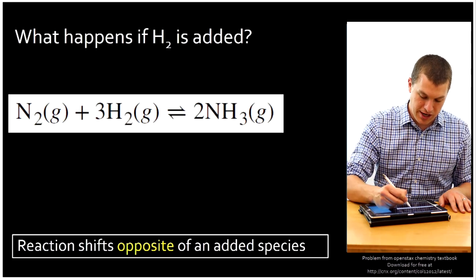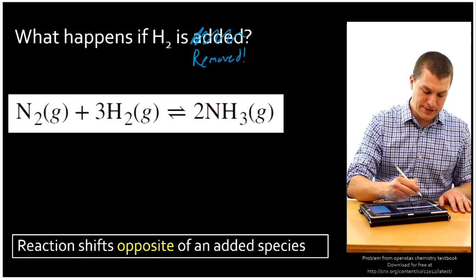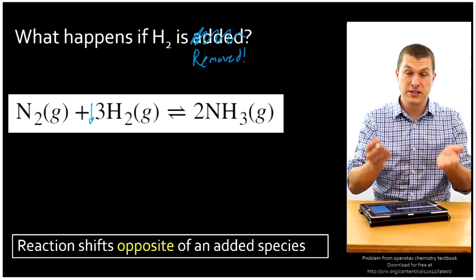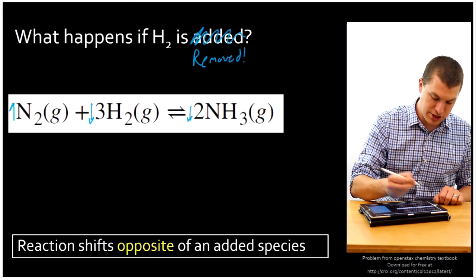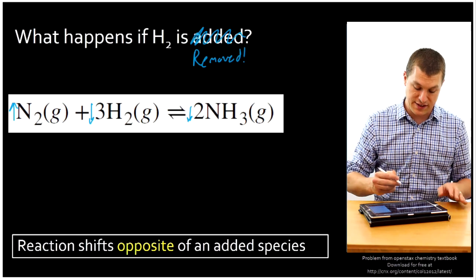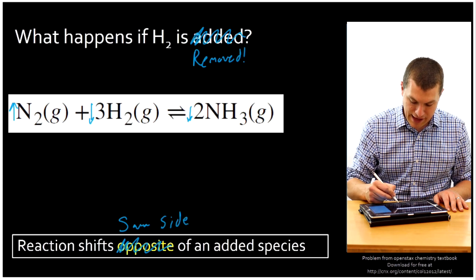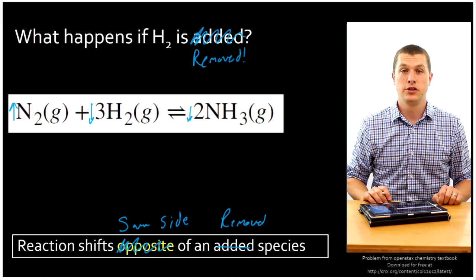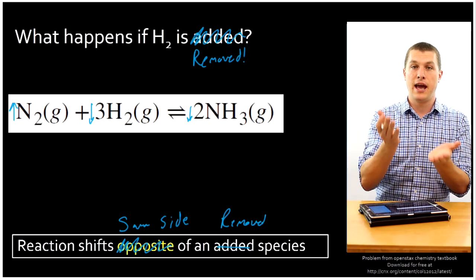What if instead of adding nitrogen, we remove it? Now I'm taking that concentration down, and because I've perturbed that equilibrium, ammonia is going to shift back to balance it out. My ammonia concentration is going to drop and my nitrogen concentration will actually increase. So if I remove a species, the reaction shifts towards that same side. You can think of it like a balloon — if I squeeze on one side, it makes the other side bigger; if I expand one side, it makes the other side smaller. We stay in balance to keep this equilibrium.